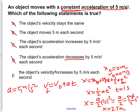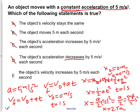The last possible choice is E, which states the object's velocity increases by 5 meters per second each second. If we return to our first kinematic equation, VF equals V0 plus AT, and say that our initial velocity is 0 meters per second with a time of 1 second, we find that our final velocity equals 0 plus 5 meters per second squared times 1 second, which gives us 5 meters per second. So for every single second, we're increasing our speed by 5 meters per second. Choice E is true.